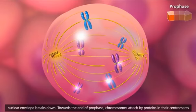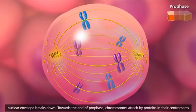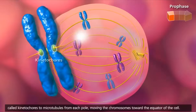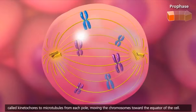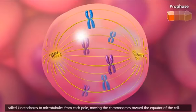Towards the end of prophase, chromosomes attach, by proteins in their centromeres called kinetochores, to microtubules from each pole, moving the chromosomes toward the equator of the cell.